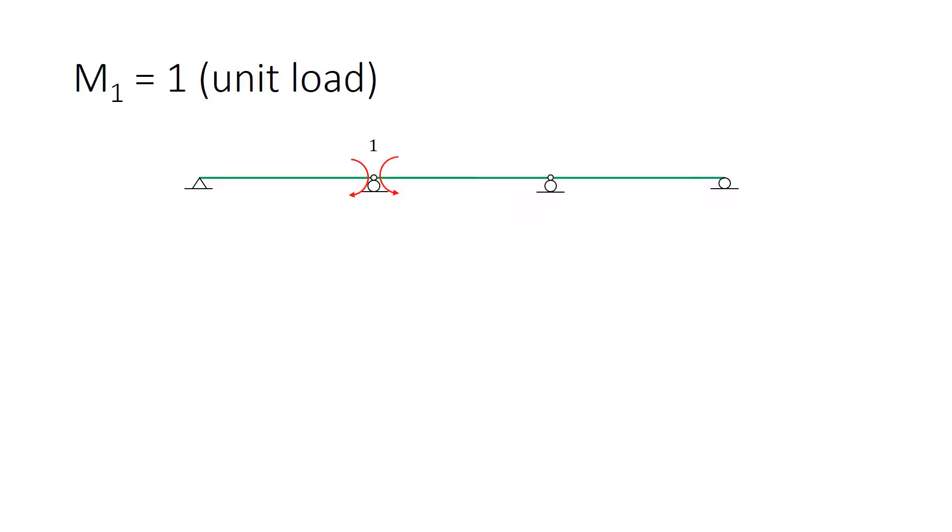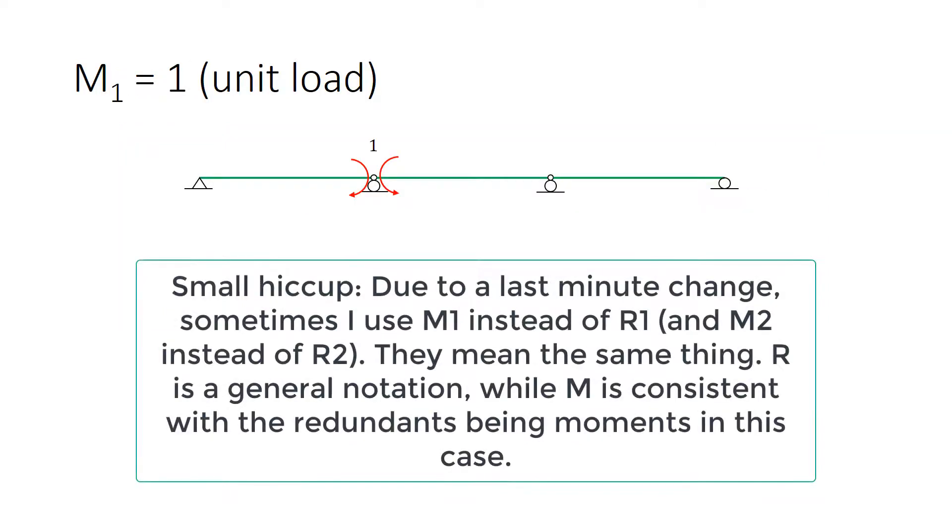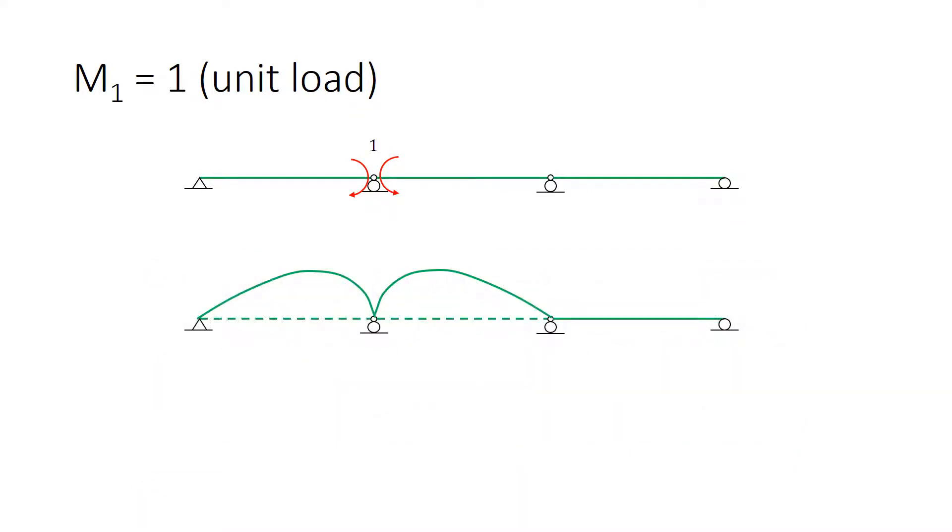Here's the primary structure with a unit load for M1. You'll notice that there's no other load on the primary structure. Let's look at the deformed shape. The structure will deform as is shown there. And we've introduced an error. We've created sharp changes of angle, where in reality, the beam needs to deform smoothly over those supports.